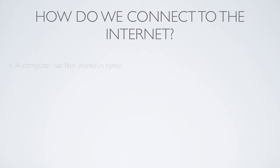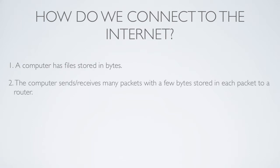How do we connect to the internet? Here are some steps of what happens. Basically, a computer has files stored in bytes. A computer sends and receives many packets with a few bytes stored in each packet to a router, modem, or whatever.